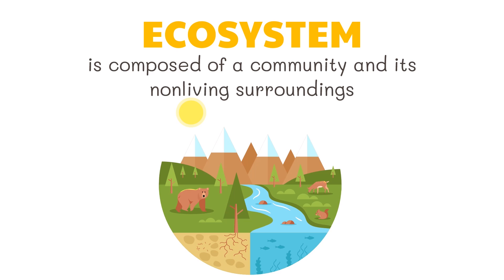An ecosystem is composed of a community, its non-living surroundings, and physical components of the environment. Rocks, water, and dirt are part of an ecosystem. Ecologists may study populations, communities, or whole ecosystems.